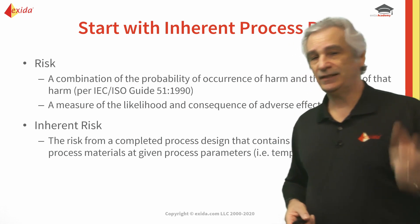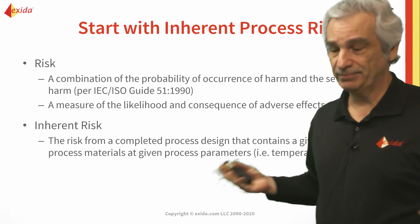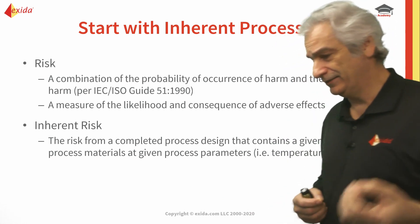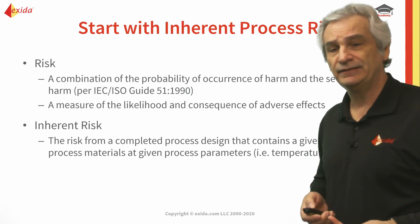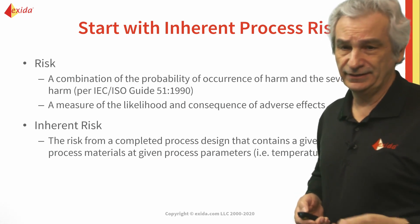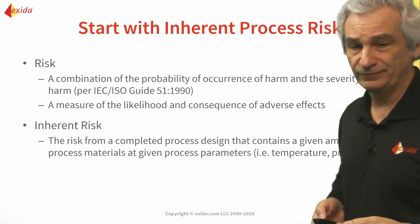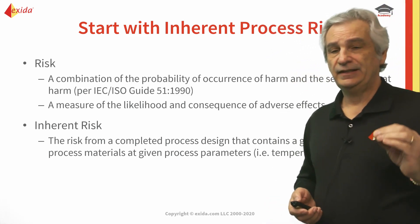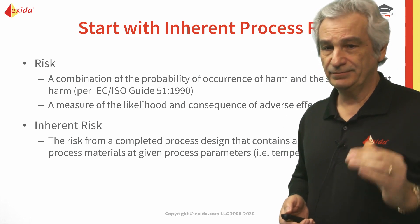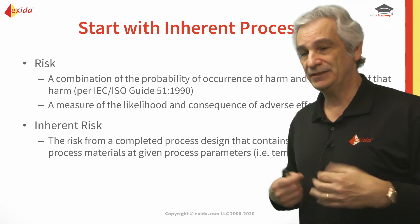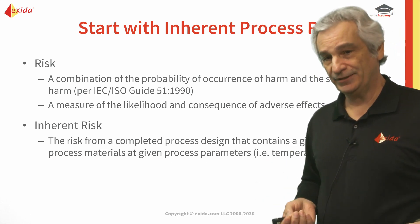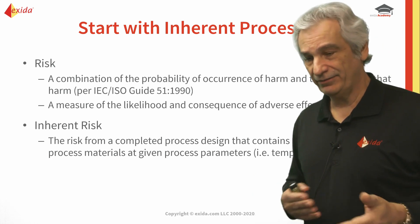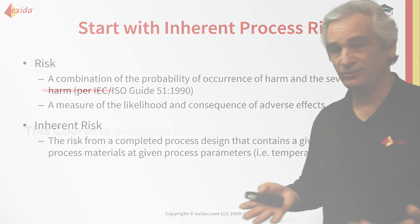We start with our inherent process risk, which is the risk posed by our operations — the combination of the likelihood of an occurrence and the severity of harm it could cause, as defined in ISO Guide 51, 1990. The inherent risk is the risk from a completed process design that contains materials at normal process parameters such as temperature and pressure. This represents what is posed by our process under normal operation.